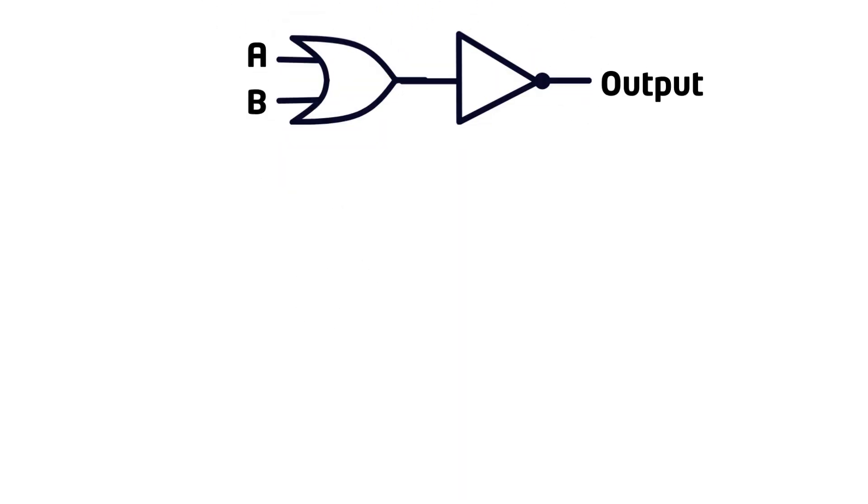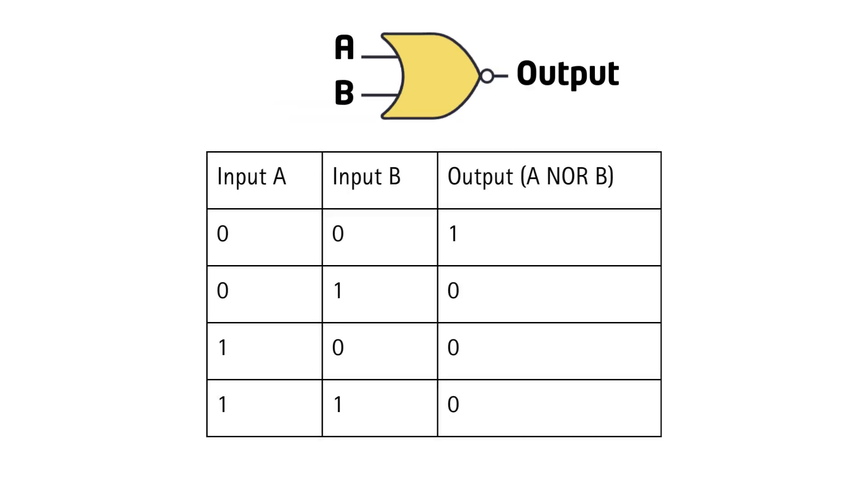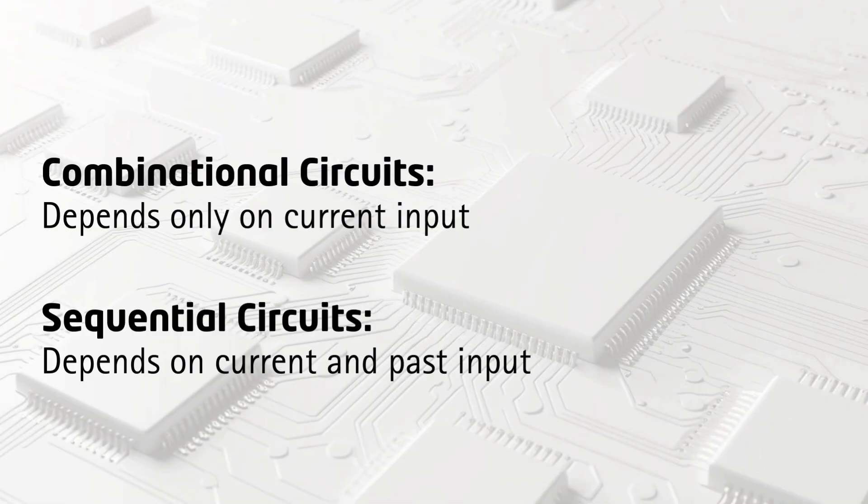When we combine the OR and the NOT gates as shown here, we have a NOR gate. The NOR gate outputs 1 only when both inputs are 0, otherwise it outputs 0. These types of logic gates are called combinational circuits because they depend only on the current input and not on the past inputs.